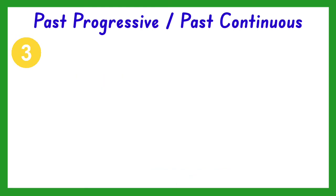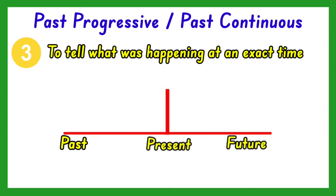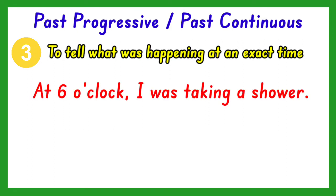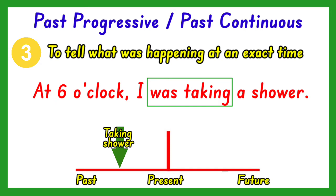Past progressive tense of the verb is also used to tell what was happening at a precise time in the past. For example, at six o'clock, I was taking a shower. The verb in the past progressive form in this sentence is was taking. The sentence tells what was going on at a specific time, which is six o'clock. That is why the verb used is in the past progressive form.